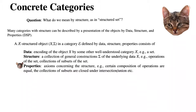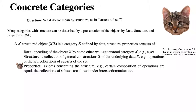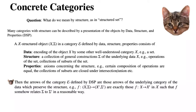By properties, we mean axioms concerning the structure. For example, certain compositions of structures are going to be equal — there will be commuting diagrams — or we'll have that collections of subsets are going to be closed under intersection, union, or whatever type of operations can be defined on them. Then the arrows of the category E can be defined by this DSP as those arrows of the underlying category of the data which preserve the structure.